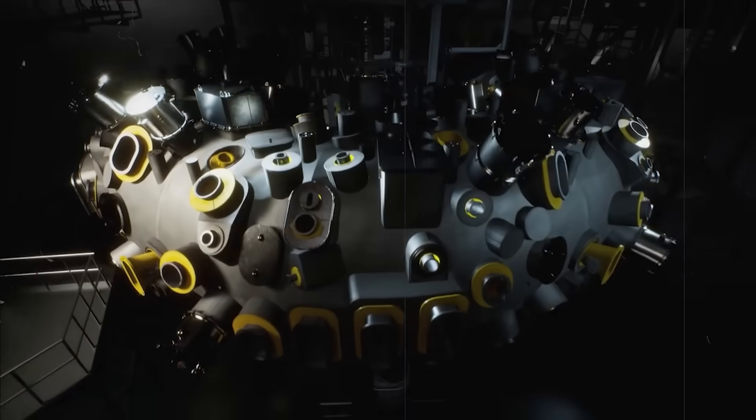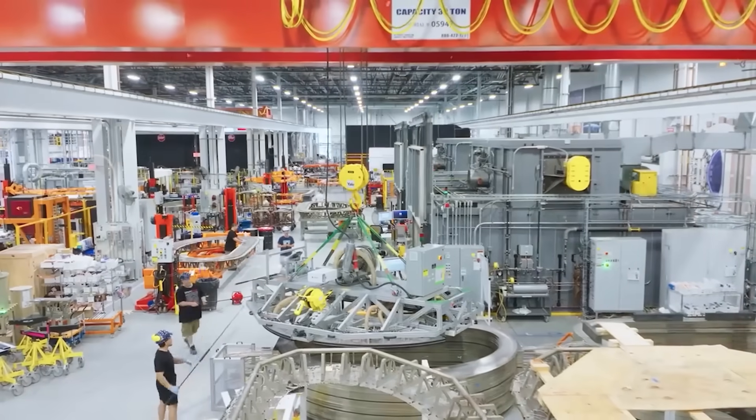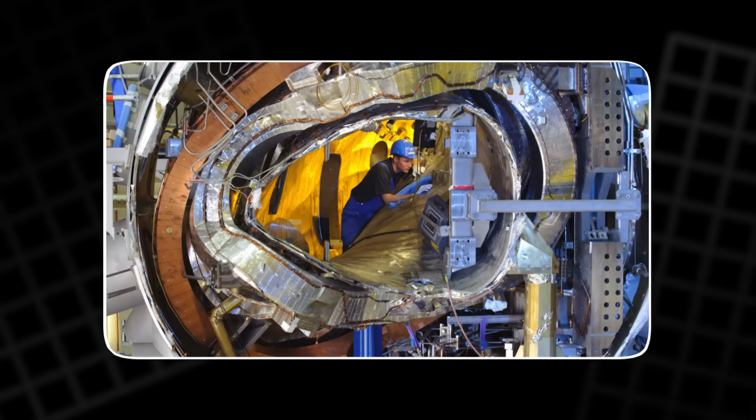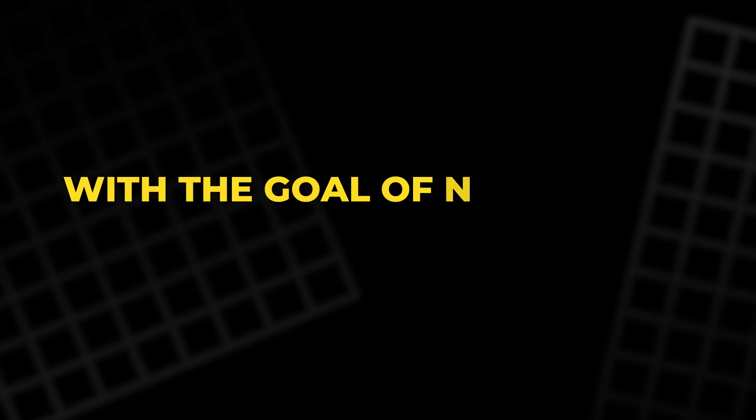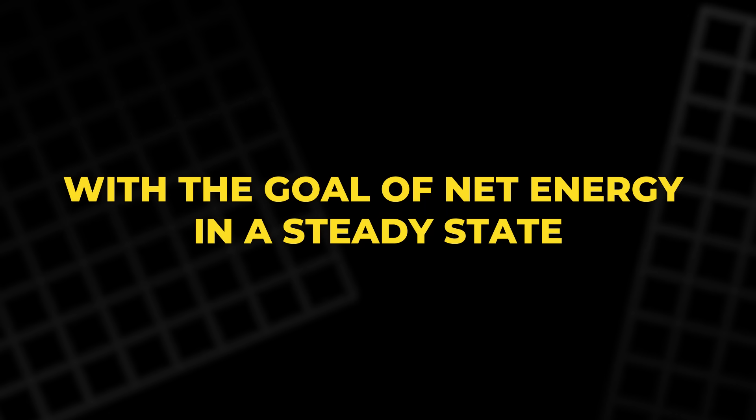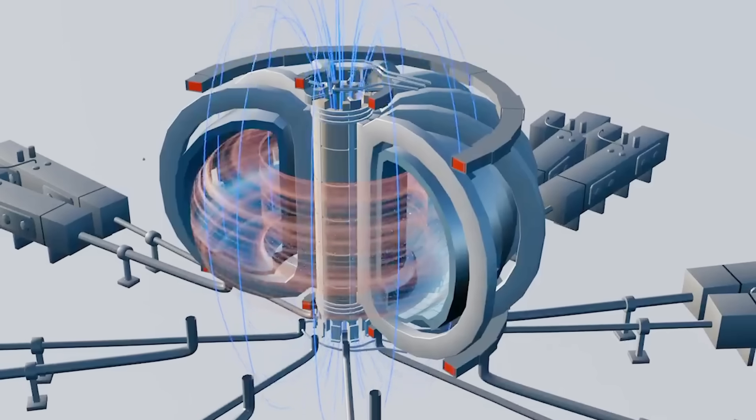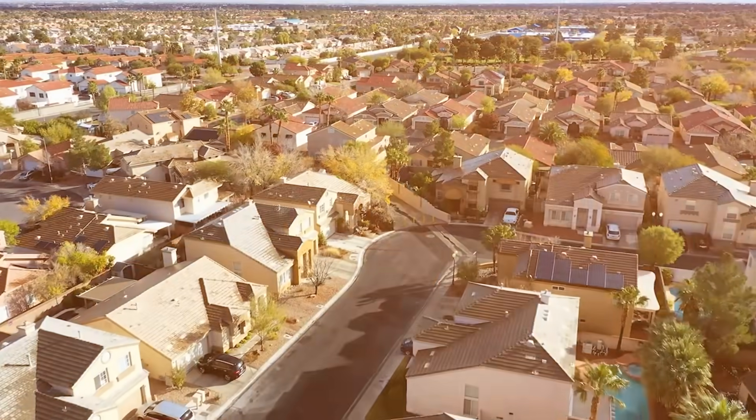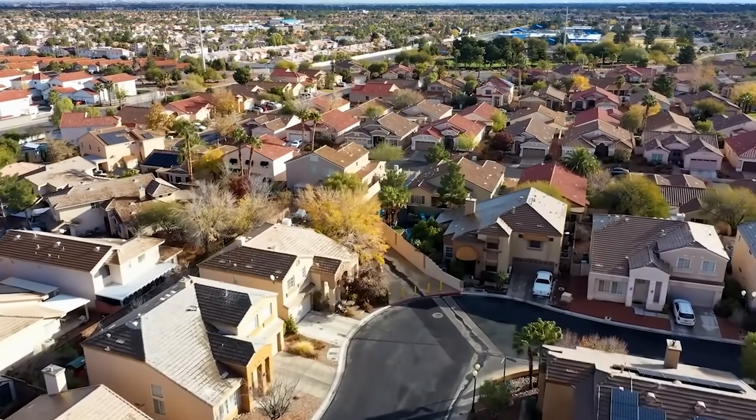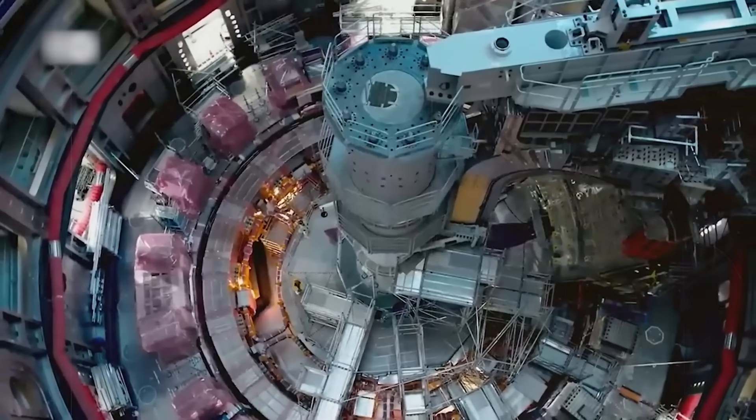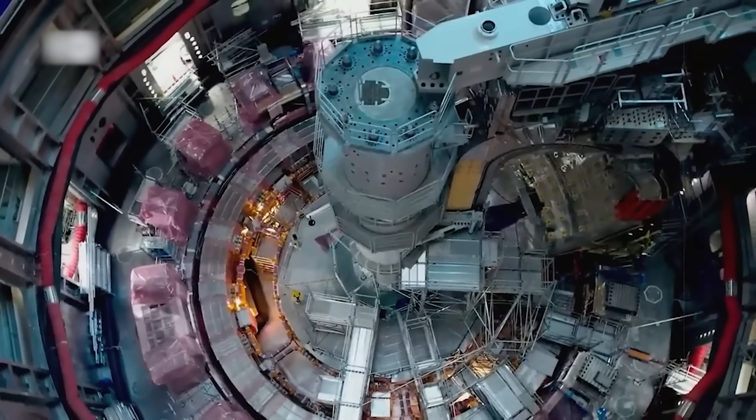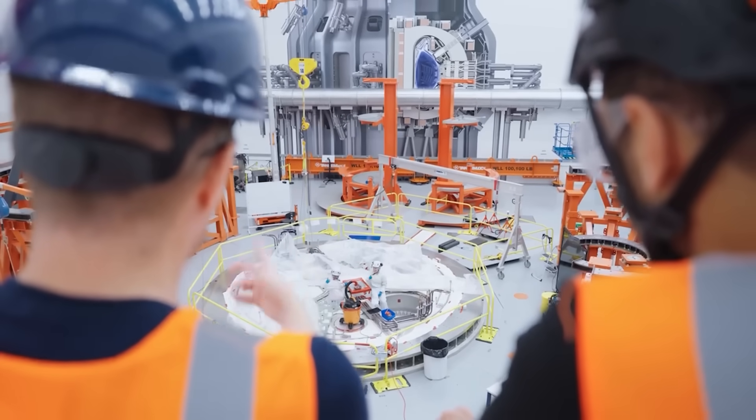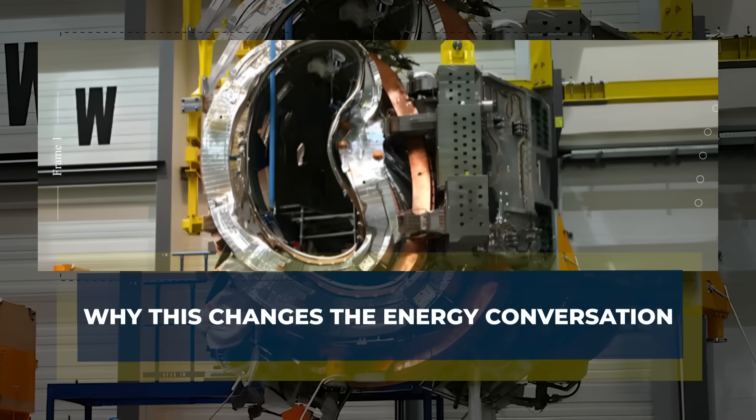Proxima's roadmap is aggressive, but clear. A test magnet is planned around 2027. A demo machine called Alpha aims to start around 2031, with the goal of net energy in a steady state. If that works, Stellaris could follow in the mid-to-late 2030s as a one-gigawatt plant, enough to power roughly three-quarters of a million homes. The key claim is that the design uses materials and supply chains that exist today, so the bottleneck is engineering, not magic.